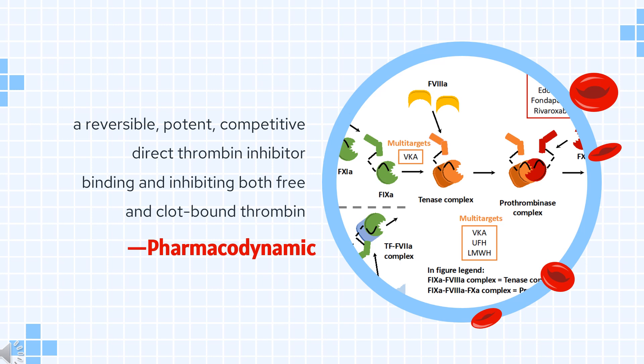Bivalent direct thrombin inhibitors, such as hirudin and bivalirudin, bind both the active site and exosite. Univalent direct thrombin inhibitors, like dabigatran, bind only the active site. Additionally, the direct thrombin inhibitors reduce the platelet aggregating effects of thrombin.